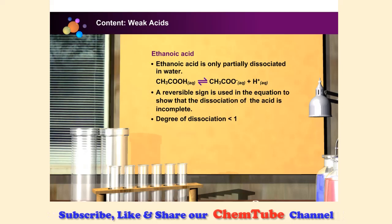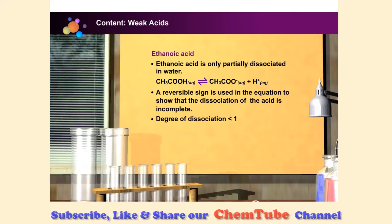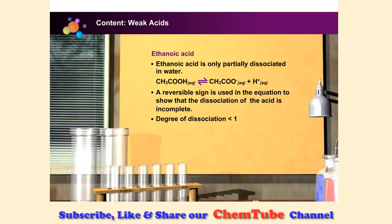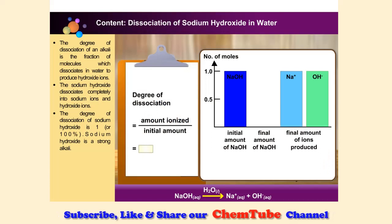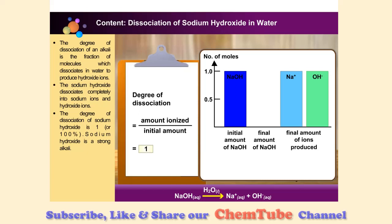An acid that is only partially dissociated in water is called a weak acid. Ethanoic acid is, therefore, a weak acid. The degree of dissociation of sodium hydroxide is 1 or 100%.